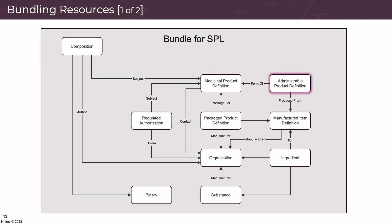Each administrable product has one or more manufactured items — the product in the dosage form found in its primary package. The manufactured item resources contain the product characteristic metadata. The resources for each ingredient in the product and each packaged product definition are linked to their respective manufactured item resources. Each ingredient resource describes an ingredient as it is in the product, including the ingredient role, strength, and basis of strength. The ingredient resource is linked to the related substance, manufactured item, and manufacturing organization.